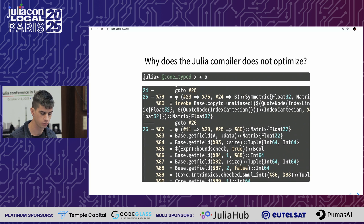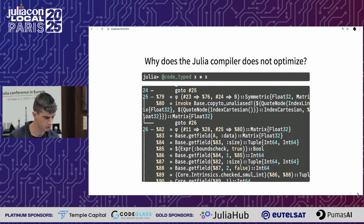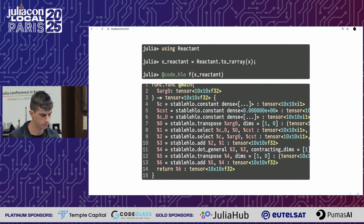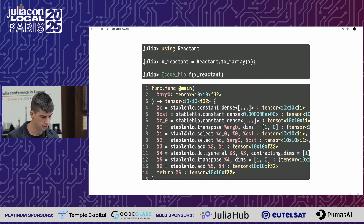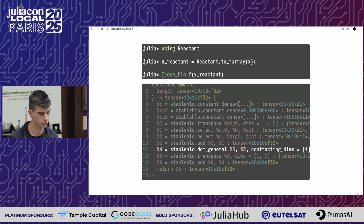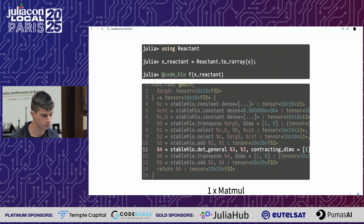In Reactant, you capture the whole program on arrays, and Reactant is actually able to reason about operations on arrays, so it can perform a few optimizations. If we look at the output of the program optimized by Reactant, you can see it didn't optimize all the way, but there is still a single matrix multiplication instead of two. There is still optimization potential, but it is already an improvement over what was naively written.